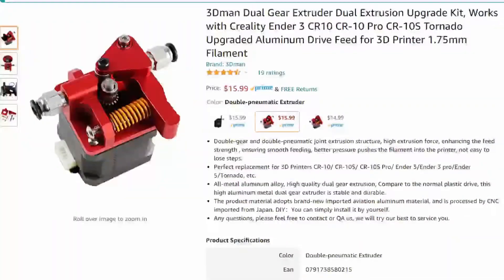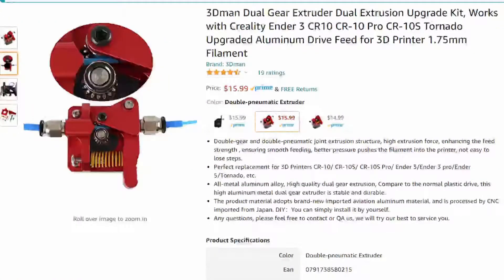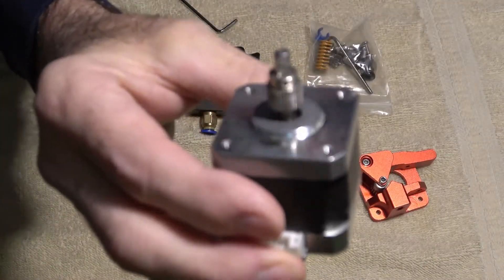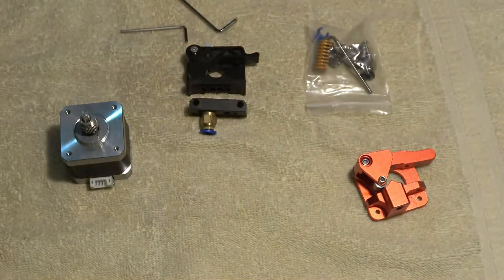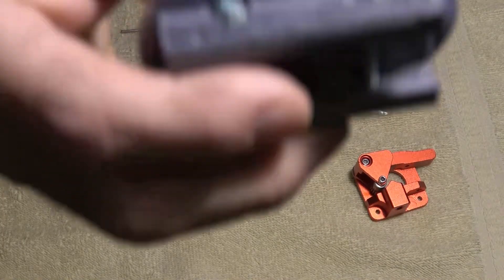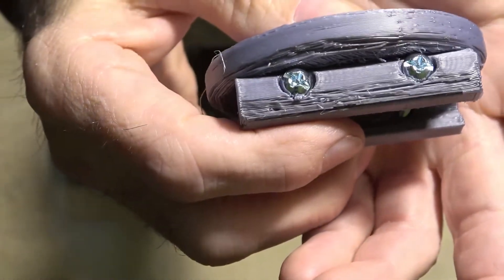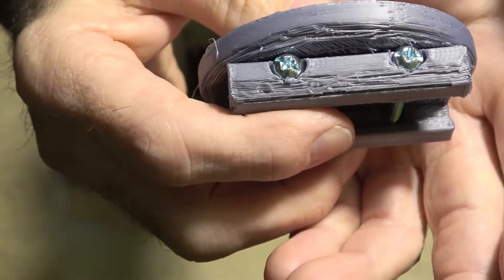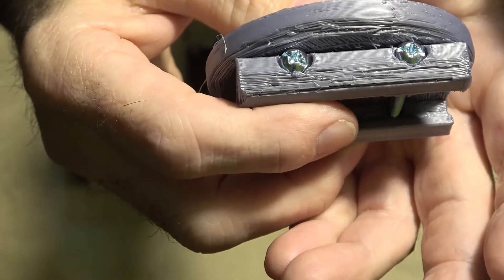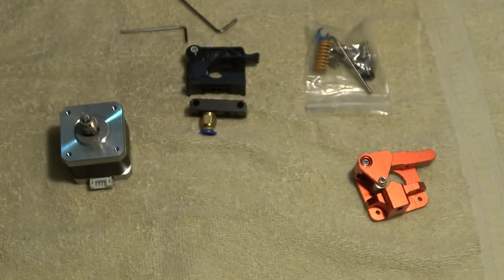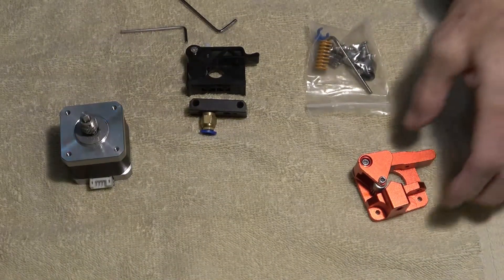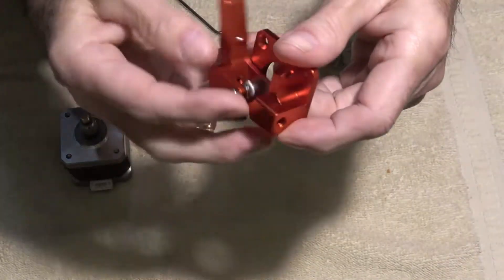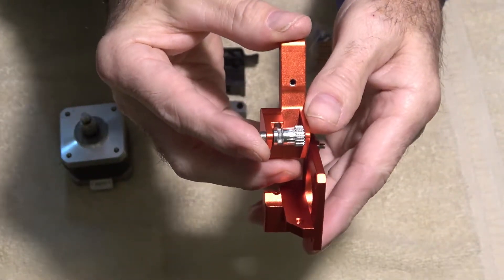I ordered this little beauty off Amazon because this drive gear doesn't quite cut it in my opinion. I'm getting prints when I run three millimeter layer height that do that randomly. Sometimes they'll be fine, sometimes they'll look like that. So I'm going to put this dual drive gear extruder on it.